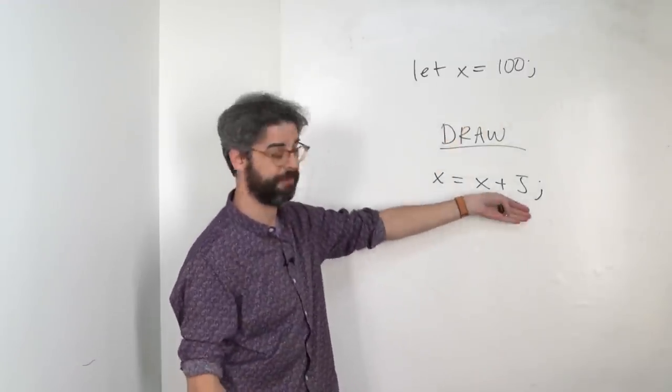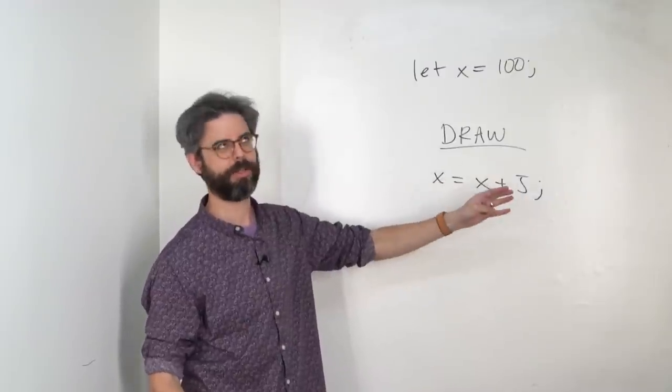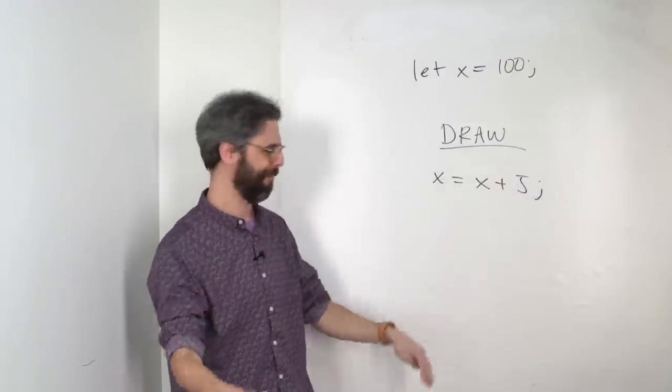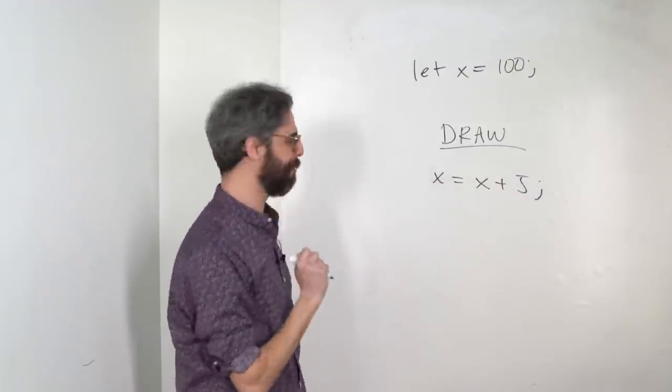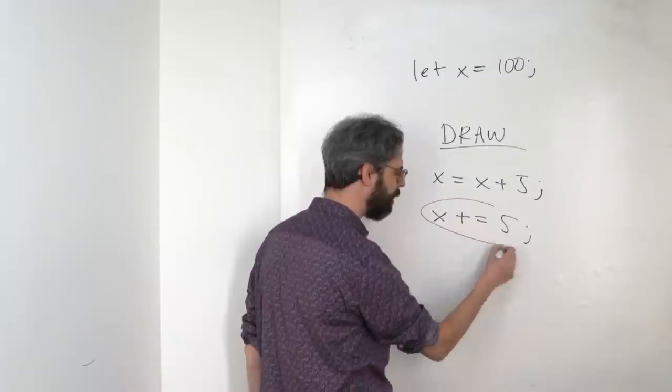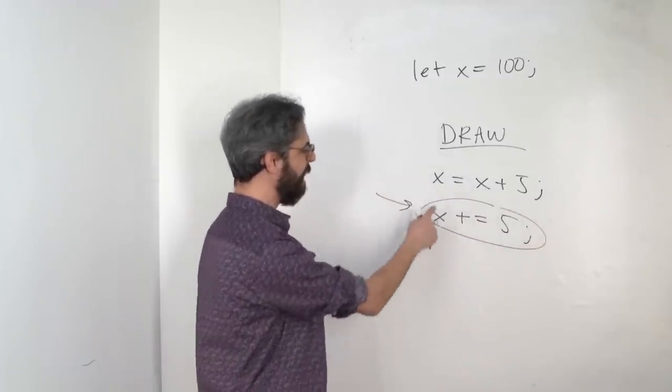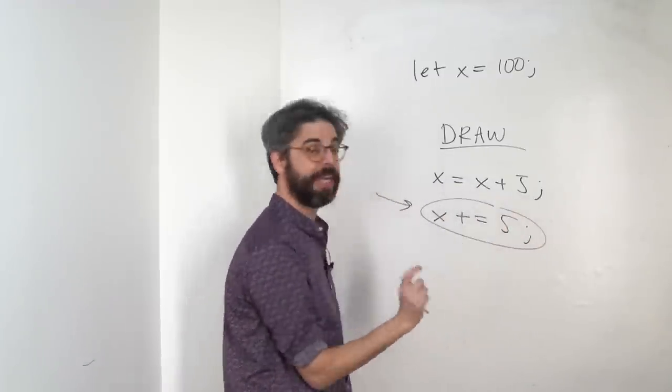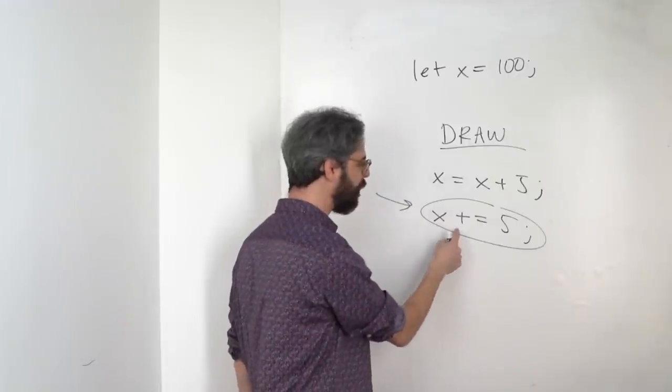Starts at 100, then becomes 105, 110, 115, and so on and so forth. This can also be written as x plus equals 5. It's common enough that this shorthand, x equals x plus 5, is reduced to x plus equals 5.